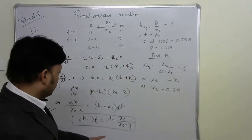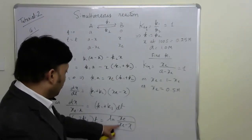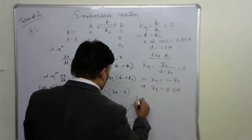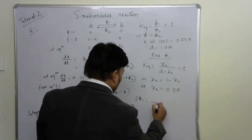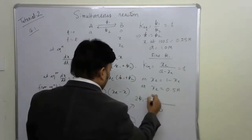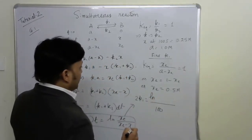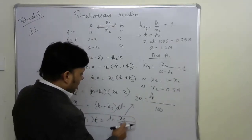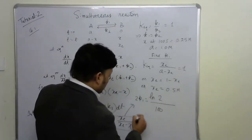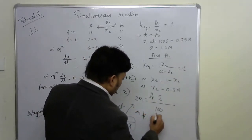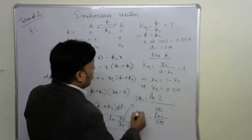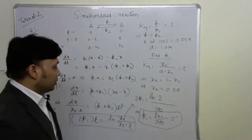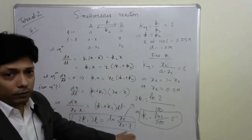Plugging in x_e equals 0.5 and x at 100 seconds equals 0.25, we get 2K1·(100) equals ln(0.5 / (0.5 minus 0.25)) equals ln(2). Therefore K1 equals ln(2) / 200 s⁻¹. You can verify this answer yourself.